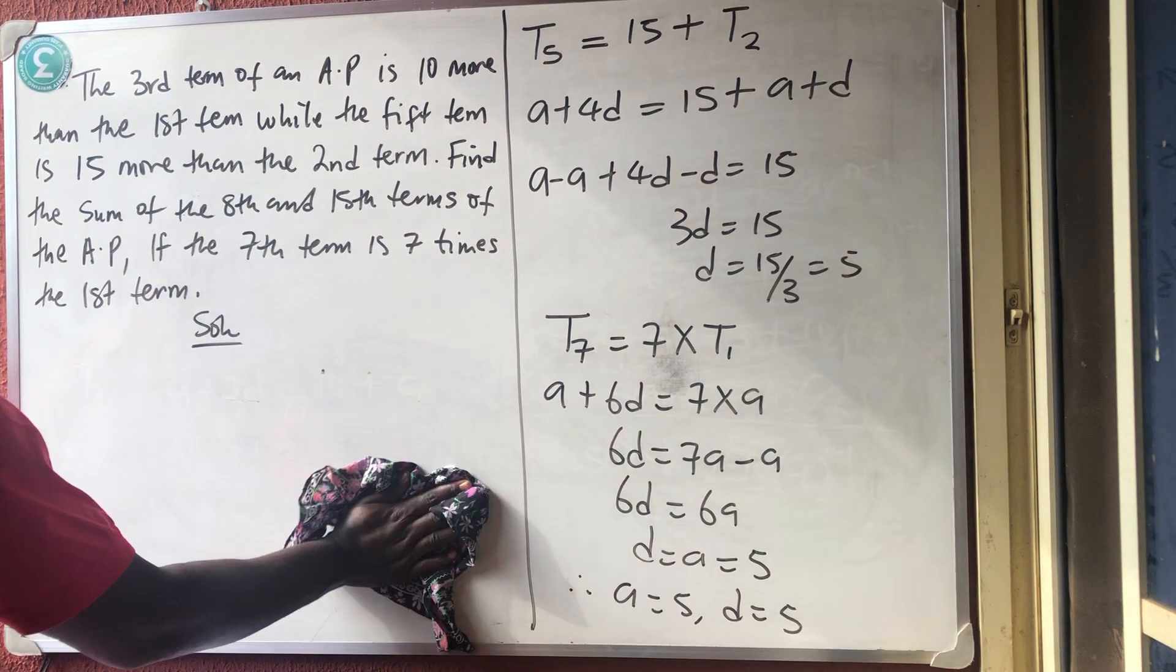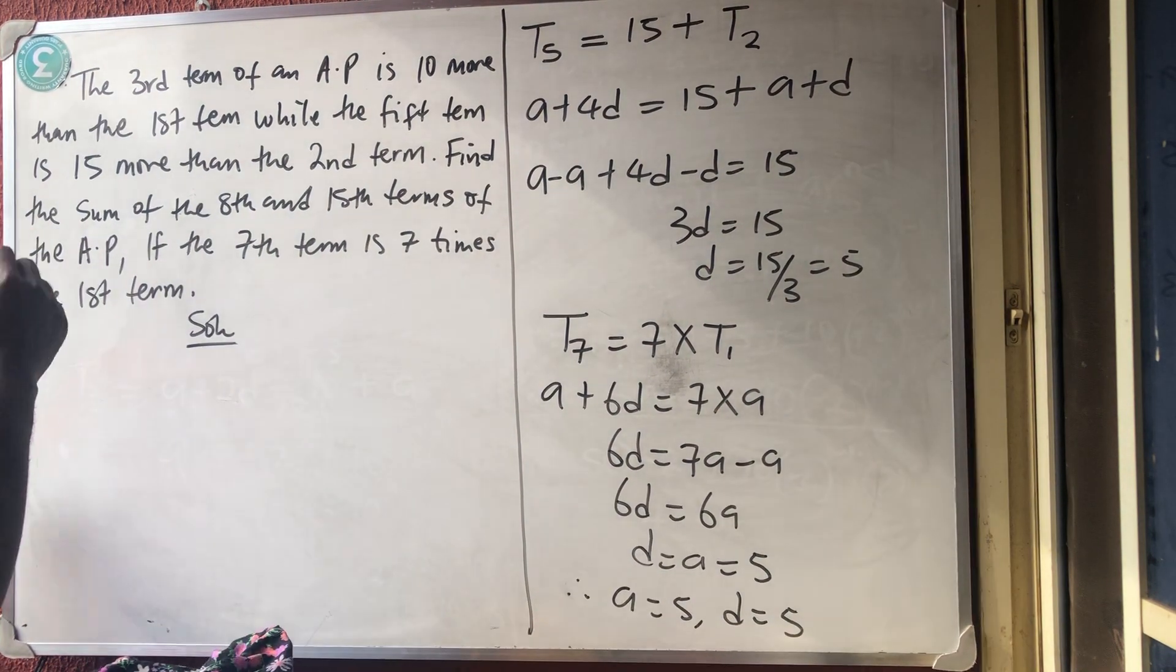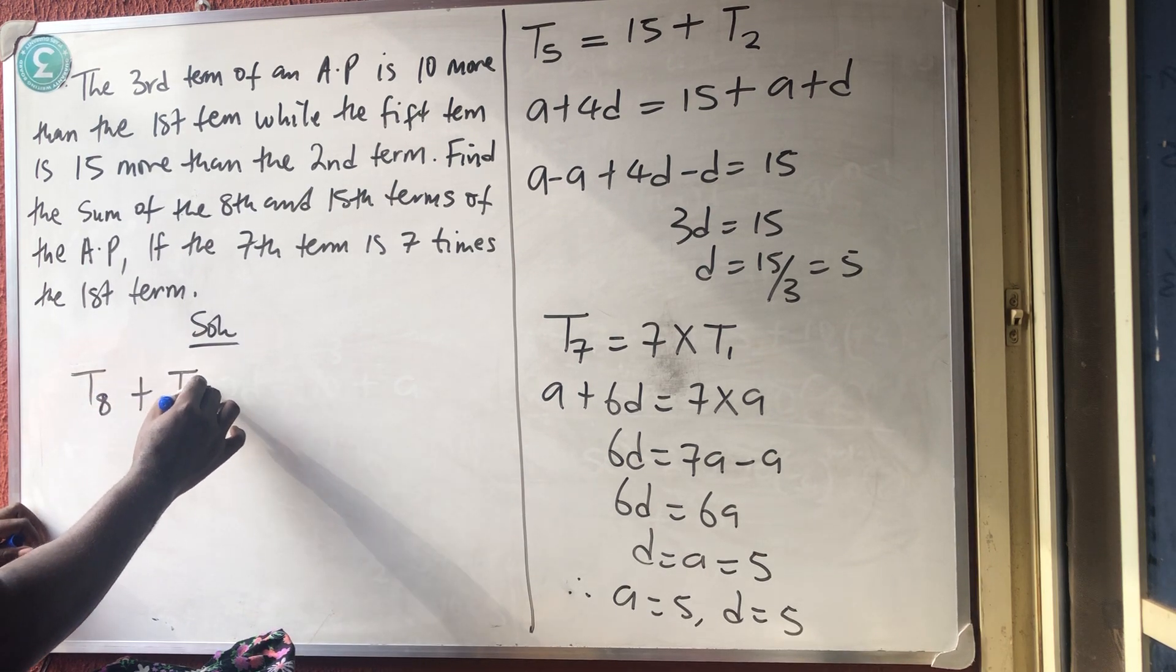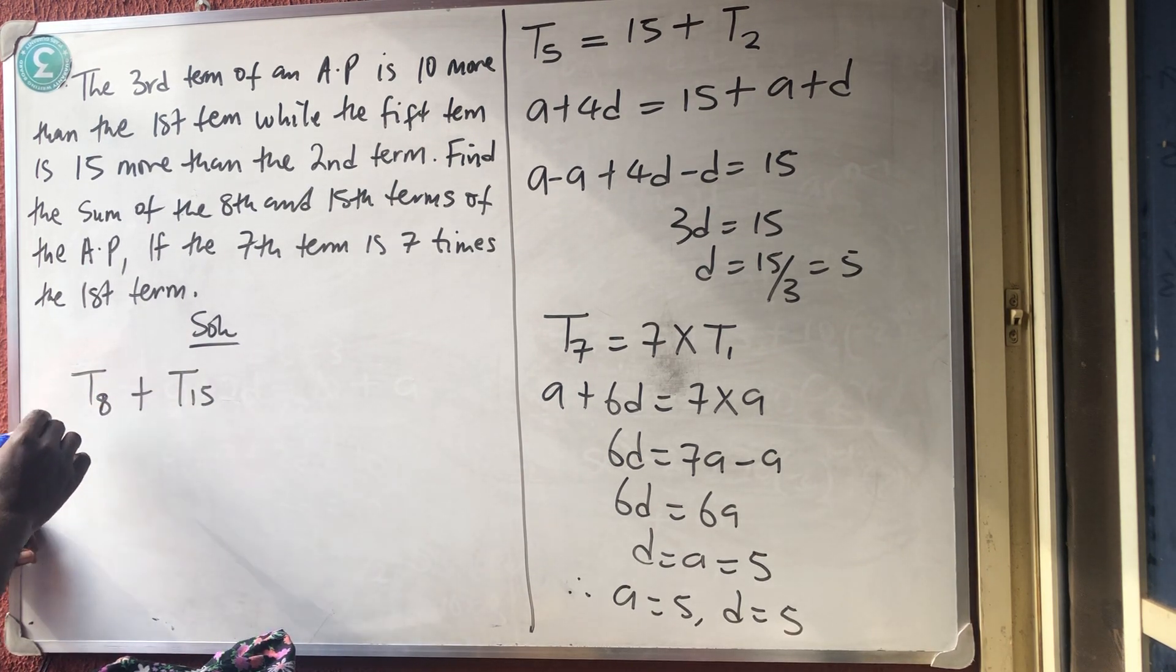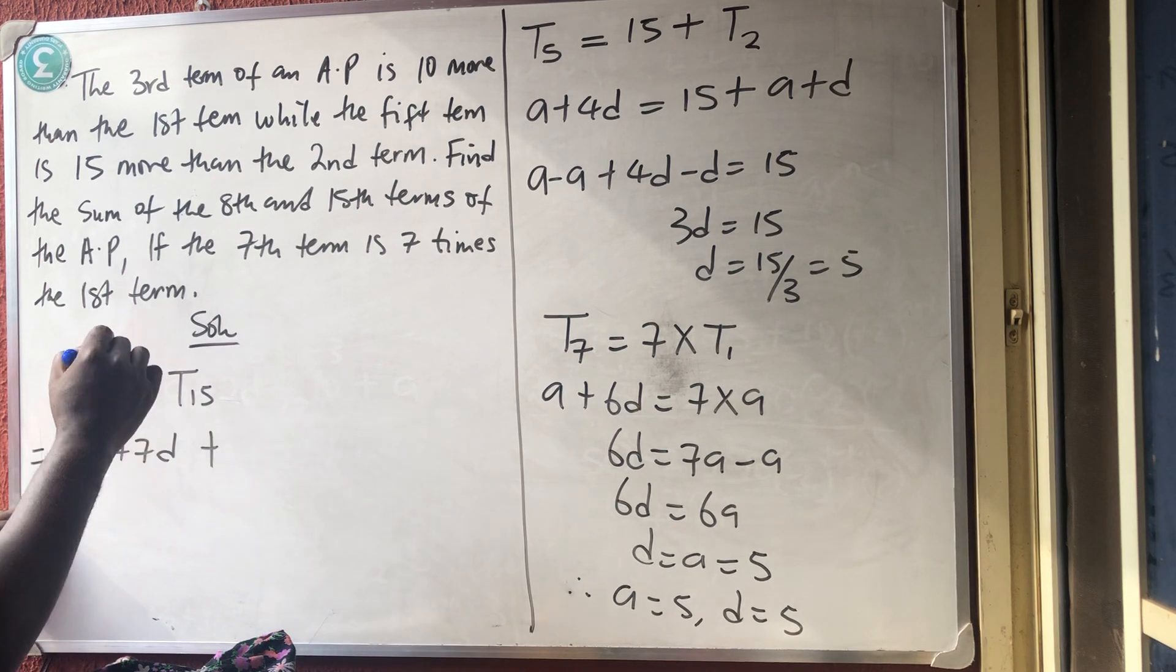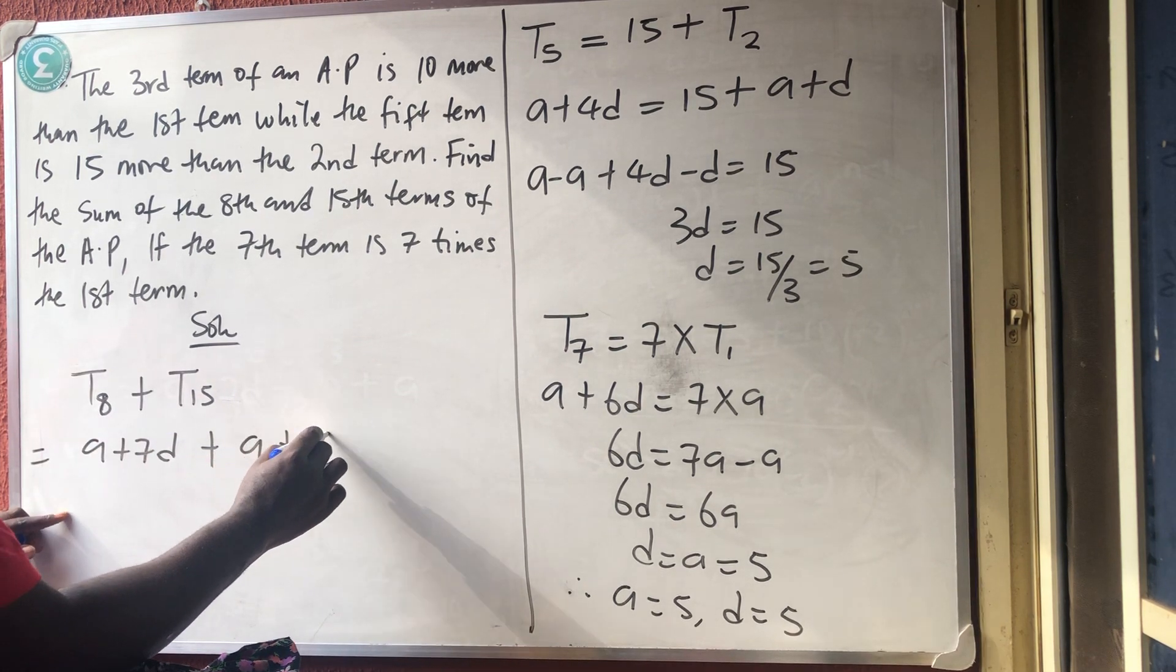So, the last thing we should find is the sum of the eighth and the 15th term. So, T8 plus T15. The formula is T8 is A plus 7D plus, for T15 is A plus 14D.